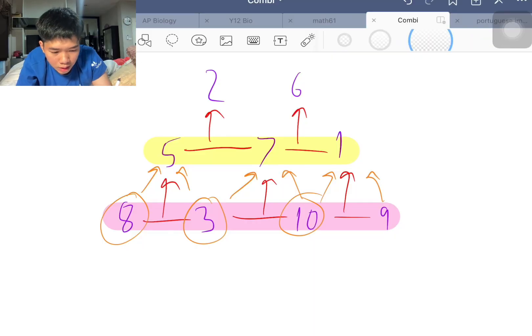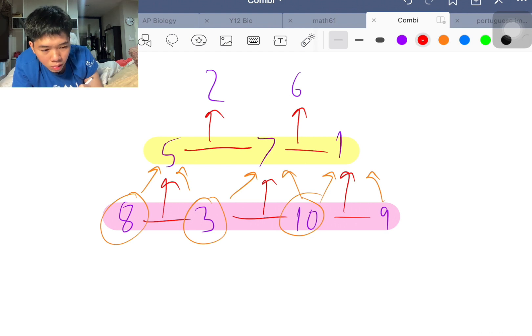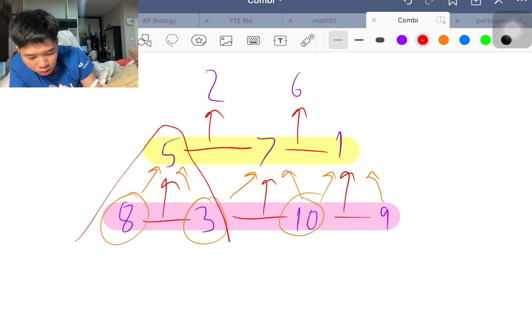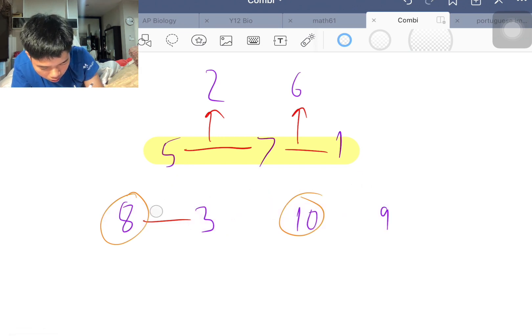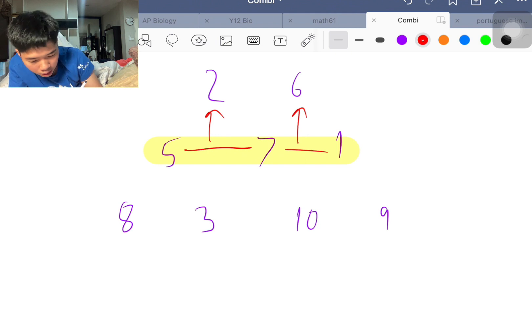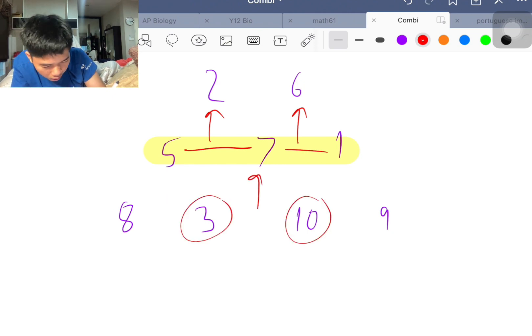So essentially, what the problem says is that if we have this antipascal array or antipascal triangle, we can take the two numbers at the bottom and create the top number in any small triangle by taking the difference. So if I delete all these funny arrows here, the mechanism behind this is that you take this pair and you write down their difference here. You take this pair and you write down the difference here.